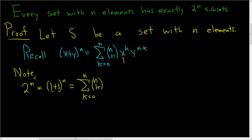Here x is 1 and y is 1. So what happens when you plug in 1 for x? You get 1 to the k, and here you get 1 to the n minus k. Well, 1 to the k is 1, and 1 to the n minus k is 1, so you just get 1.